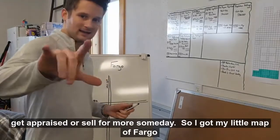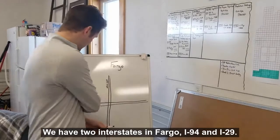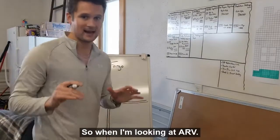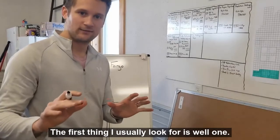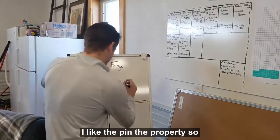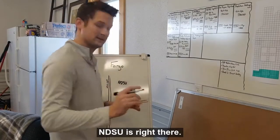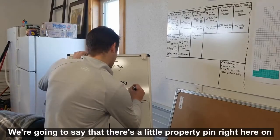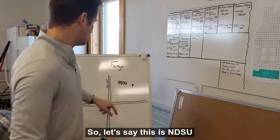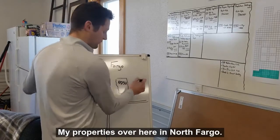So I got my little map of Fargo here. We have two interstates in Fargo: I-94 and I-29. And so when I'm looking at ARV, the first thing I usually look for is, well one, I like to pin the property. So NDSU is right there. We're going to say that there's a little property pin right here on our property. So let's say this is it. NDSU here, my property is over here in North Fargo. So now I know where that's at.